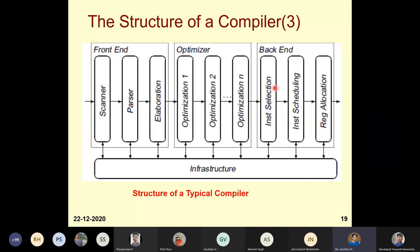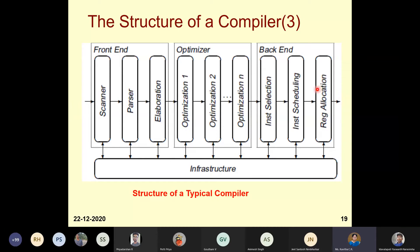To summarize: first is instruction selection based on the IR's sequence of operations. Then instruction scheduling — which instruction executes first, which next. Then register allocation — data must be in memory or a register, and we use temporary registers for operations, aiming for fewer registers. The entire structure takes a source program — C, C++, or Java — and produces executable code for a particular target machine. That is the overall structure of the compiler.